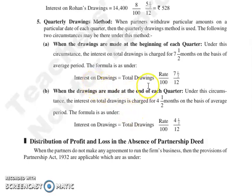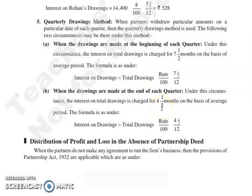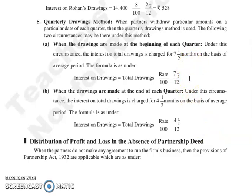Is mein chiz wahi same basic use honi hai jo fourth method humne kiya tha — interest on drawings ko calculate karne ka. Usmein use kiya tha: months left after first drawing plus months left after last drawing, divide by two. Yaha par same chiz follow hogi: months left after first drawing plus months left after last drawing, divide by two.